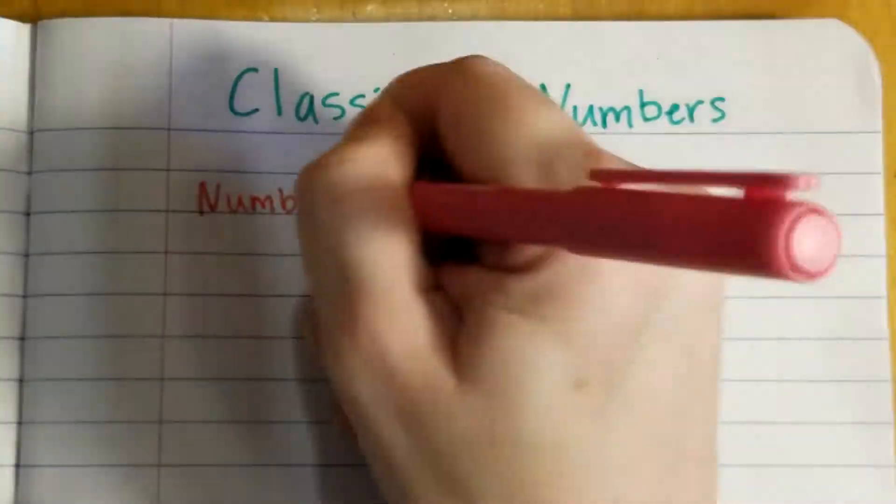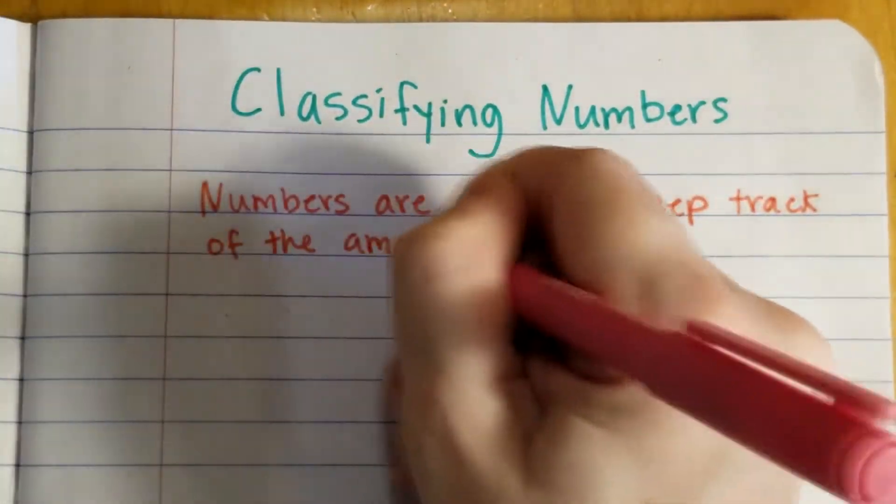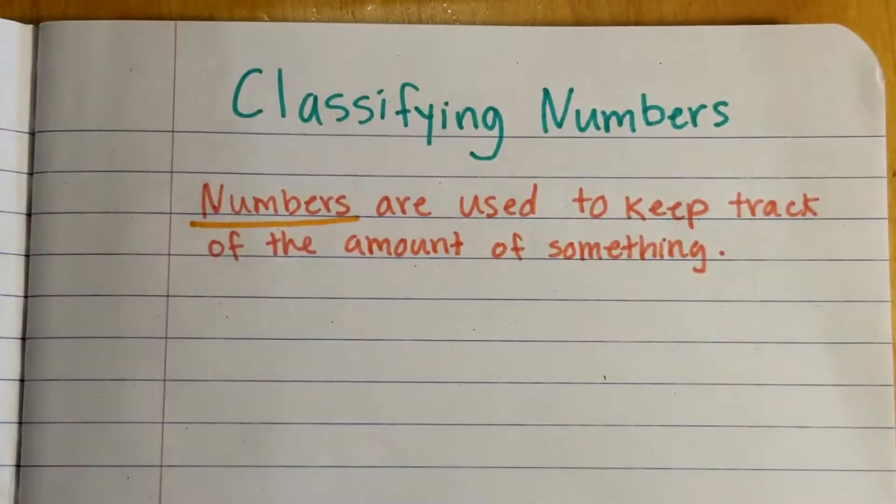But before we can classify them, we have to think — what really is a number? Imagine we go back in time before there were numbers, when being a shepherd was a really popular job. A shepherd has to protect and keep track of all of their sheep. But imagine there are no numbers — how would you keep track of your sheep? Numbers are used to help keep track of the amount of something, like sheep.